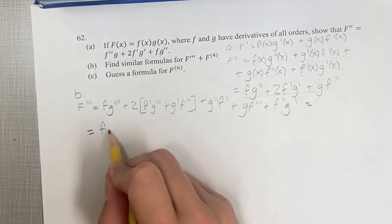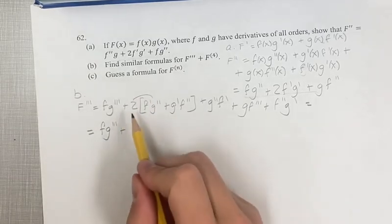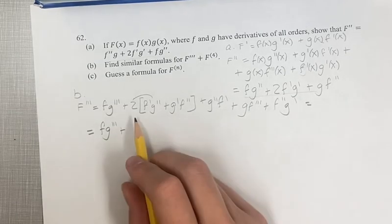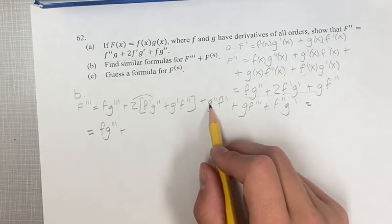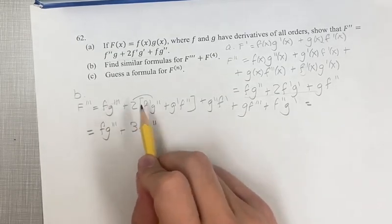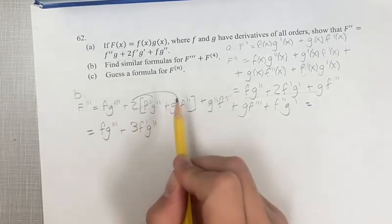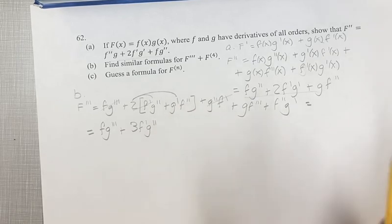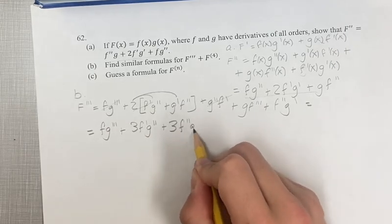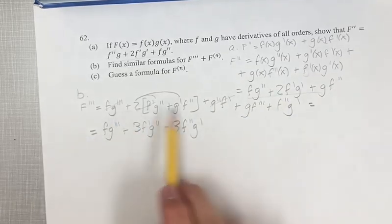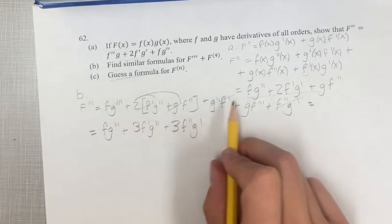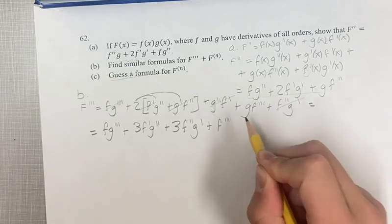This is equal to f g triple prime, plus two f prime g double prime, plus another f prime g double prime — so that's three f prime g double prime — plus two g prime f double prime, plus another f double prime g prime, so that's three f double prime g prime. I'm putting the f's before the g's to make the pattern easier to see. And lastly, we have plus f triple prime g.